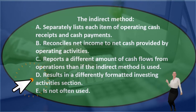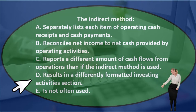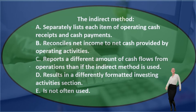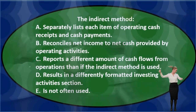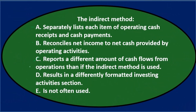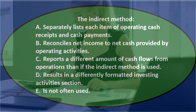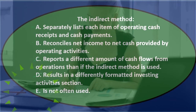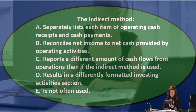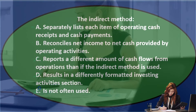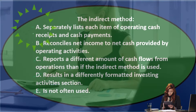D) results in a differently reported investing activities section — these two methods only deal with the operating section; investing and financing activities remain the same whether using indirect or direct method, so it's not D. E) is not often used — that's not true; the indirect method is probably used more than the direct method, and it's often required. So it's between A and B.